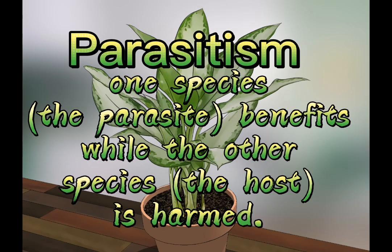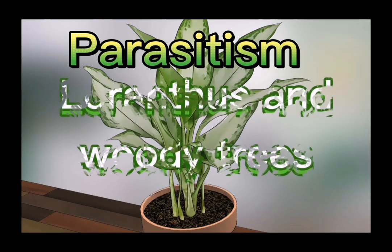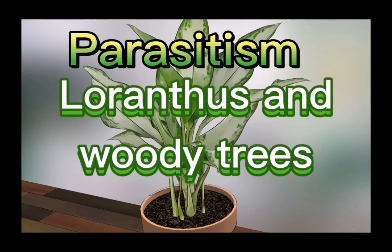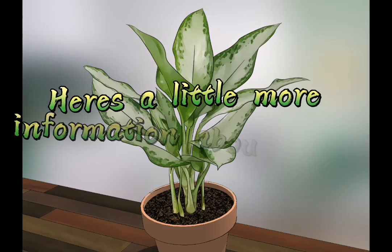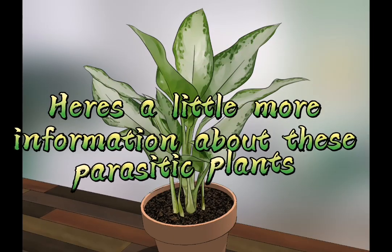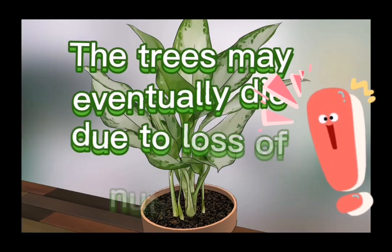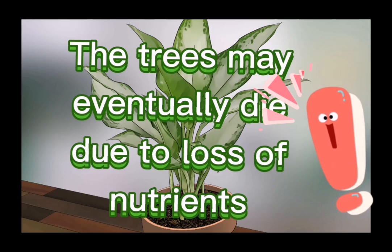Parasitism: one species, the parasite, benefits while the other species, the host, is harmed. Loranthus and woody trees: Loranthus is a genus of parasitic plant that grows on the branches of woody trees. They suck nutrients and water from the host trees. The trees may eventually die due to loss of nutrients because of these parasitic plants.